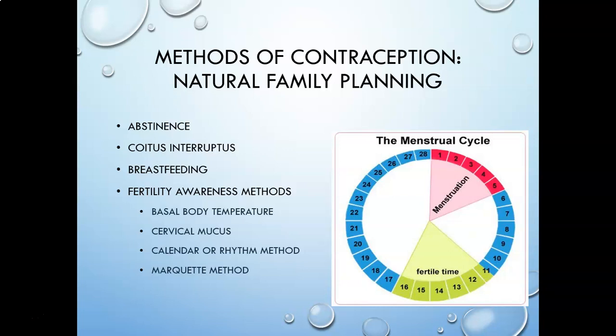The four big fertility awareness methods include basal body temperature. The woman checks her temperature every morning before getting out of bed. When a woman is ovulating, her temperature will go up about half a degree to a degree — not much, but because they're tracking it daily they'll see that increase and avoid sexual intercourse during those few days.